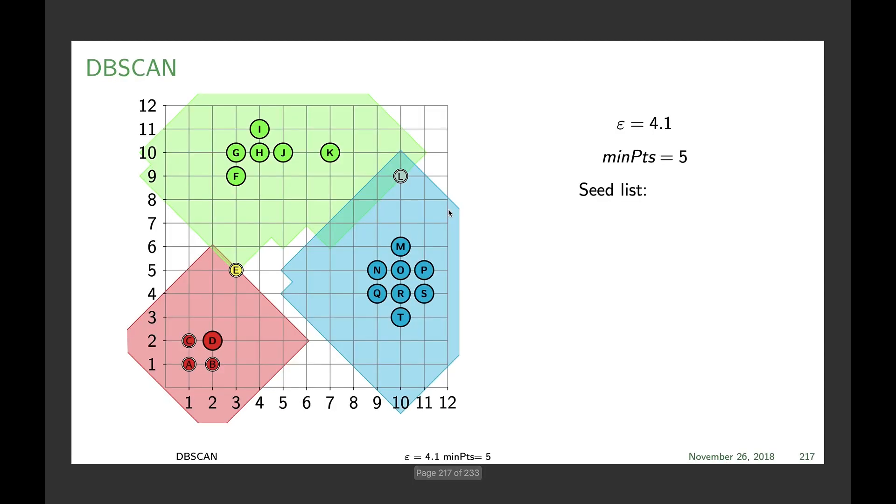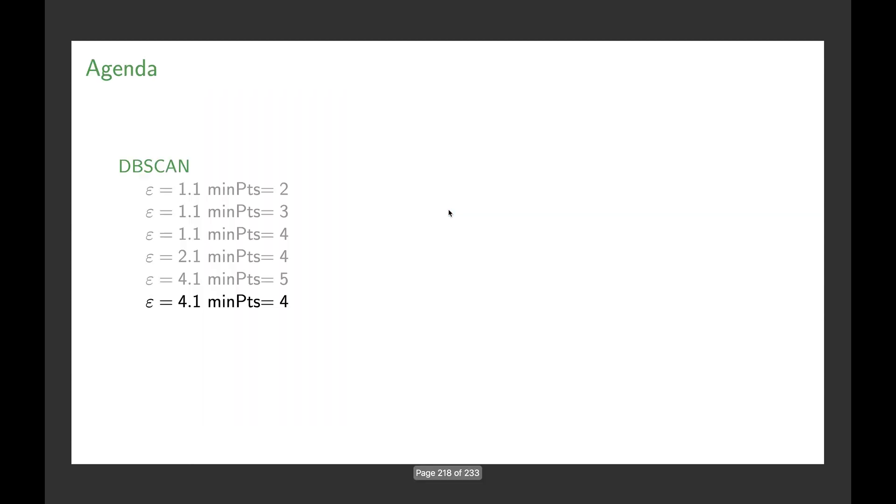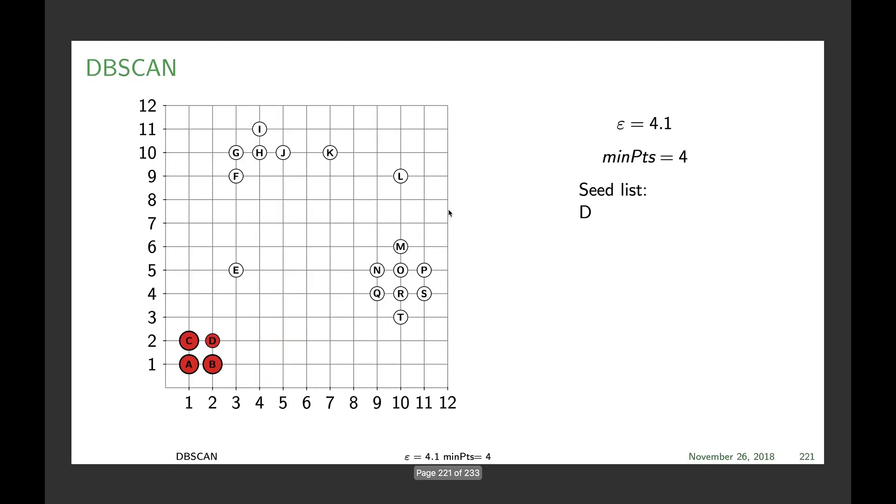And here's our cluster borders. And the last one, range 4.1 and minPts 4. That would look rather similar. Of course, the bottom will become a full cluster again with not only D being a core point.